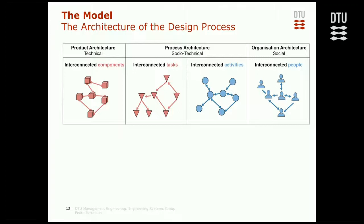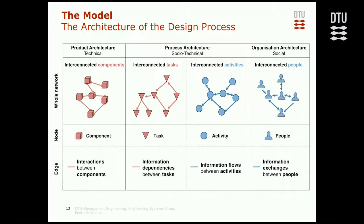When we have that, we can think about the three levels of analysis: we have the whole network; we have the node — in the case of the product, components; in the case of the process, tasks and activities; in the case of organization, people. And we have the edges — connections between elements. In components, we have interactions between components. In the process architecture for tasks, we have information dependencies — technical information dependencies between tasks. In activities, we have information flows between activities, which are different things. And in the organization architecture, we have information exchanges between people.